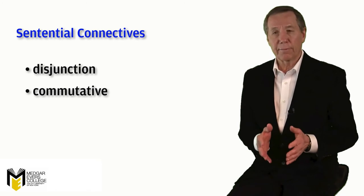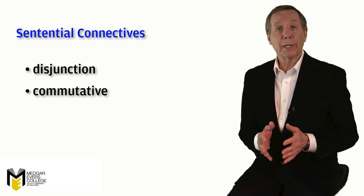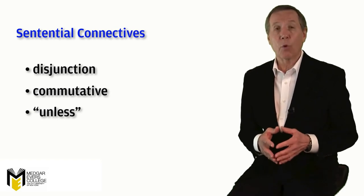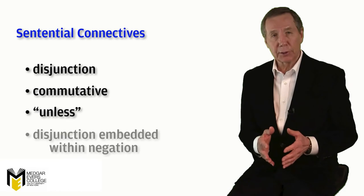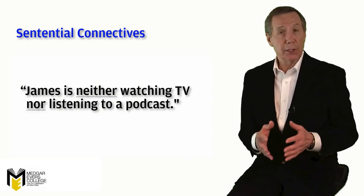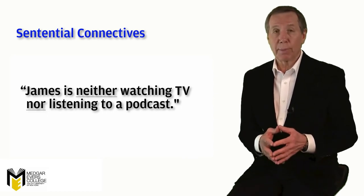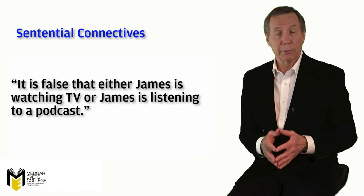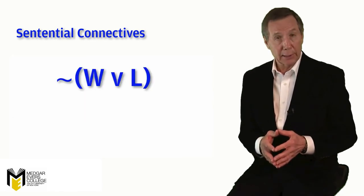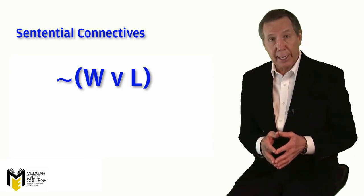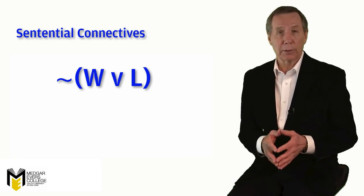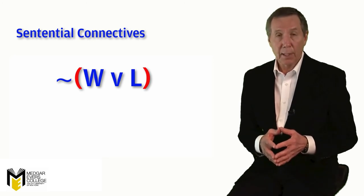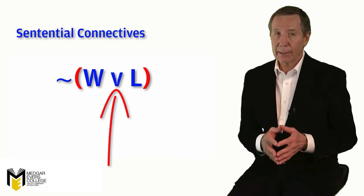We should also note several other features of disjunction. First, you can use the word 'unless' to form a disjunction, as in 'unless it's the weekend I'm working,' which means 'either it's the weekend or I'm working.' Second, we frequently find a disjunction embedded within a negation, such as 'James is neither watching TV nor listening to a podcast,' which is logically equivalent to saying 'it is false that either James is watching TV or James is listening to a podcast.' We can easily symbolize this as tilde, open parenthesis, W wedge L, close parenthesis — using W and L to symbolize our two disjuncts. Note the use of parentheses to define what is being negated: we are negating the disjunction of W and L, not the individual disjuncts.